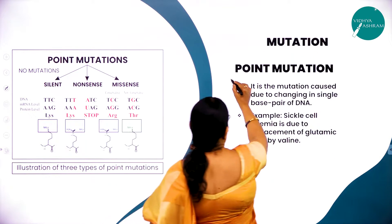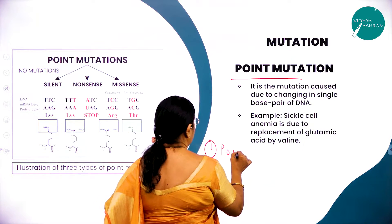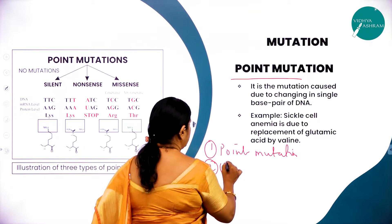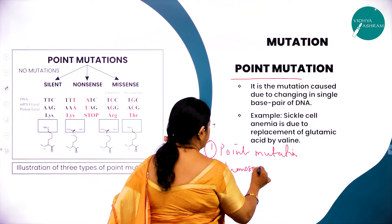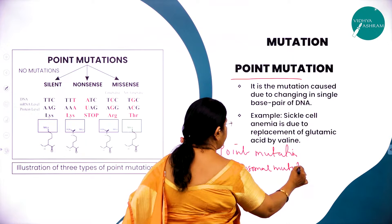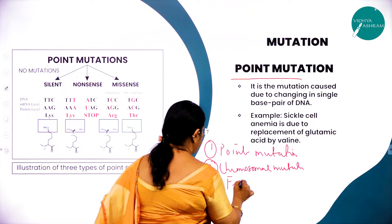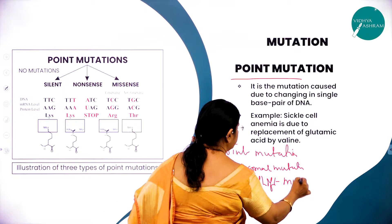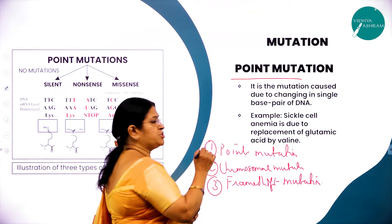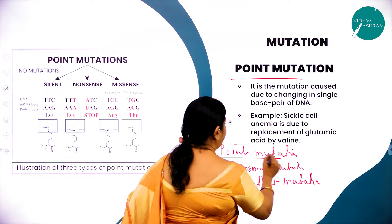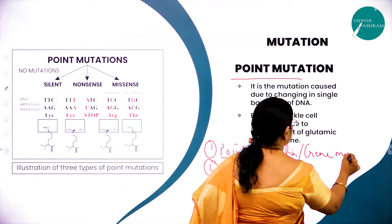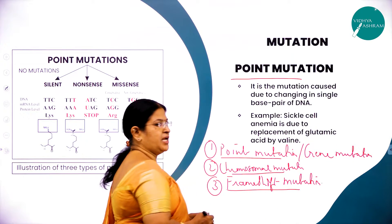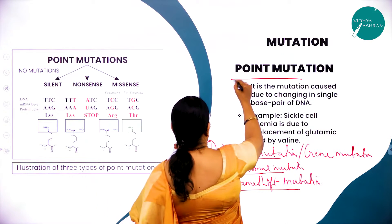There are three types of mutation: the first is called point mutation, also called gene mutation; the second is called chromosomal mutation; and the third is called frame shift mutation.